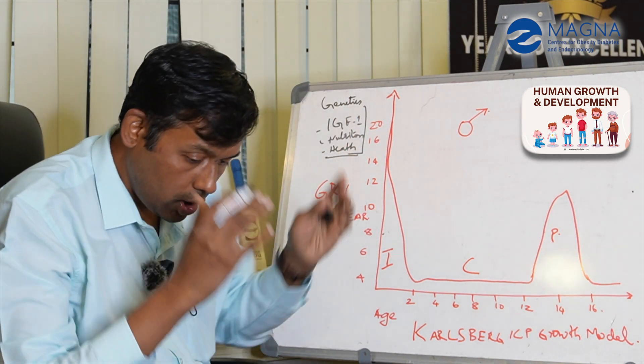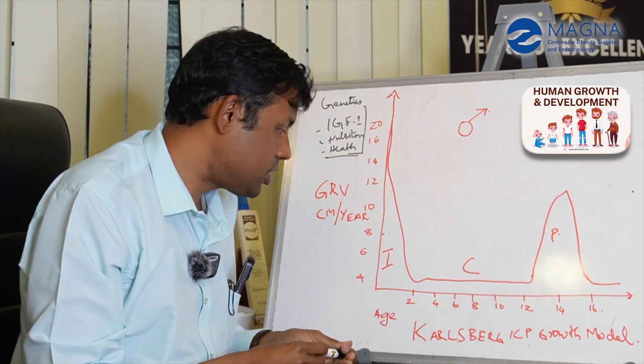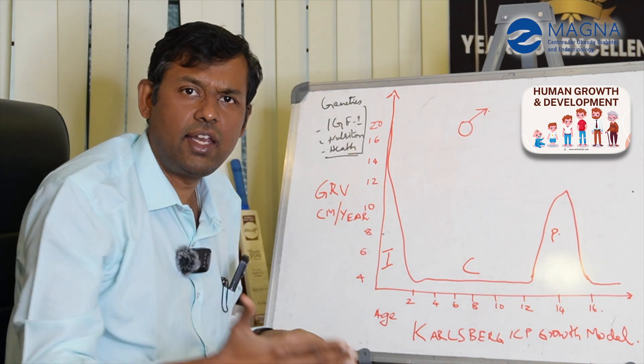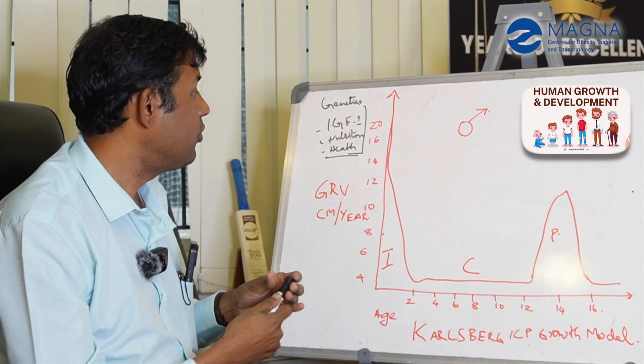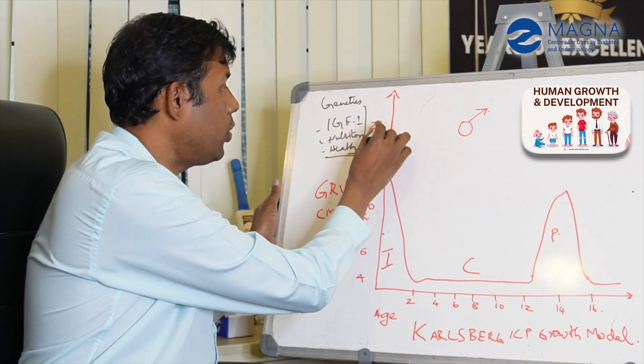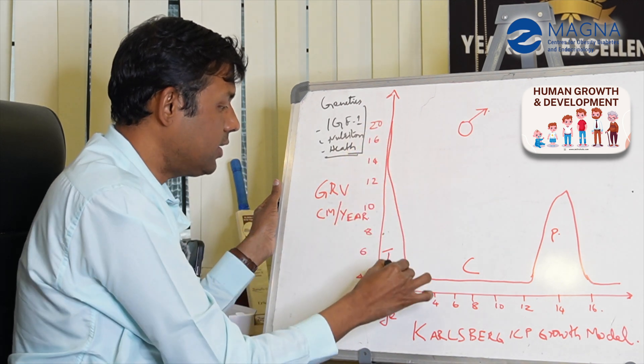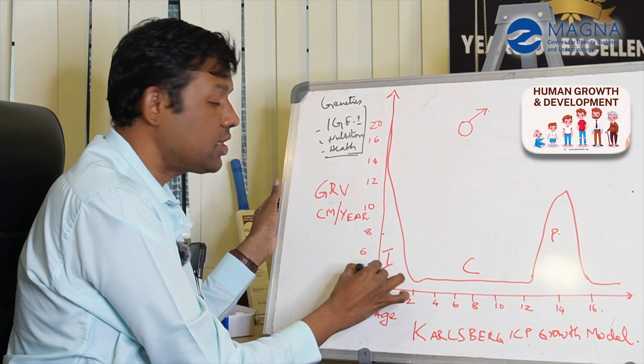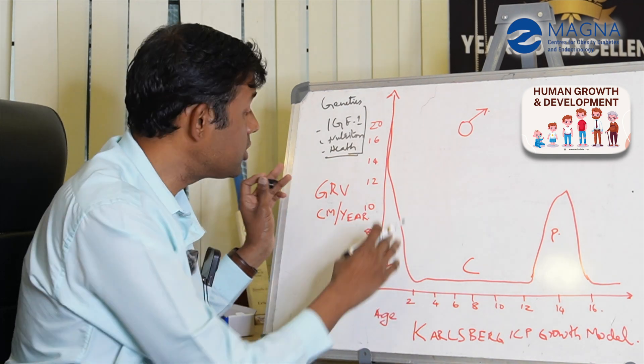Now, after the child is born, in the first two years of life, the growth velocity rapidly decelerates. In the first year of life, the growth velocity is around 25 centimeters. By the time the child reaches two years of age, the growth velocity is down to four centimeters per year.